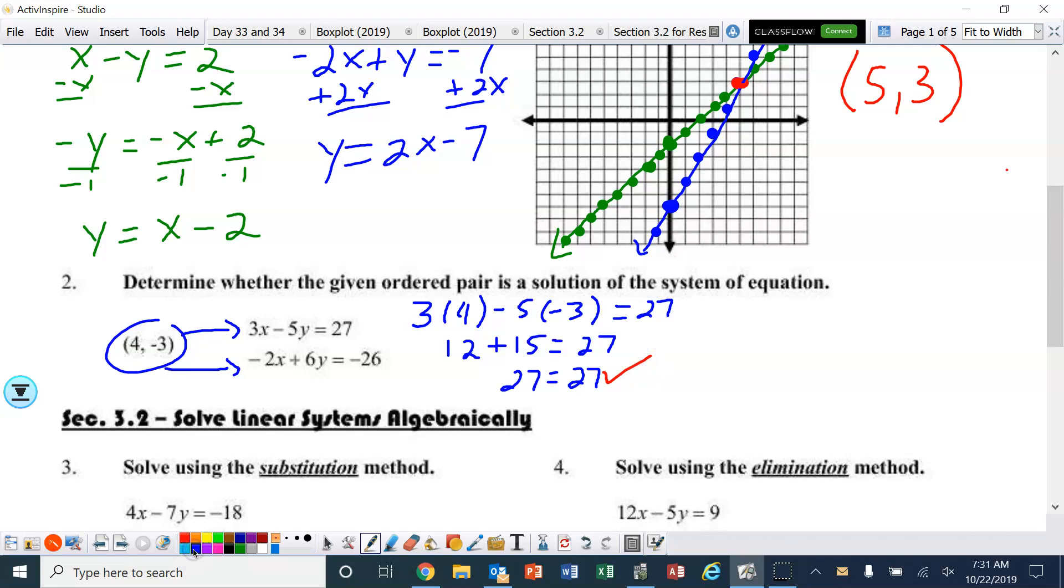Let's plug it into the other one. We've got negative 2 times 4 plus 6 times negative 3. And we want to see, does that equal negative 26? Well, this is negative 8. This becomes plus negative 18. And negative 8 plus negative 18 is negative 26. So, yes, it works for that one also.